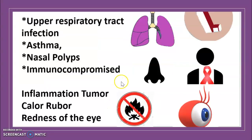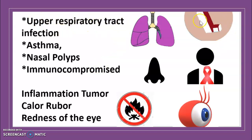There are some conditions that predispose to periorbital cellulitis: upper respiratory tract infection, asthma, nasal polyp, and being immunocompromised.